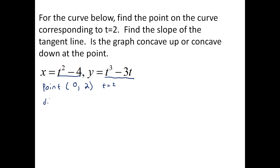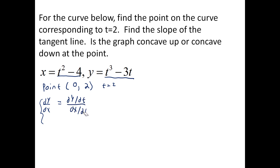Find the slope of the tangent line — that's given by the first derivative dy/dx. We find dy/dx by finding dy/dt divided by dx/dt. dy/dt is 3t squared minus 3, and dx/dt is 2t.